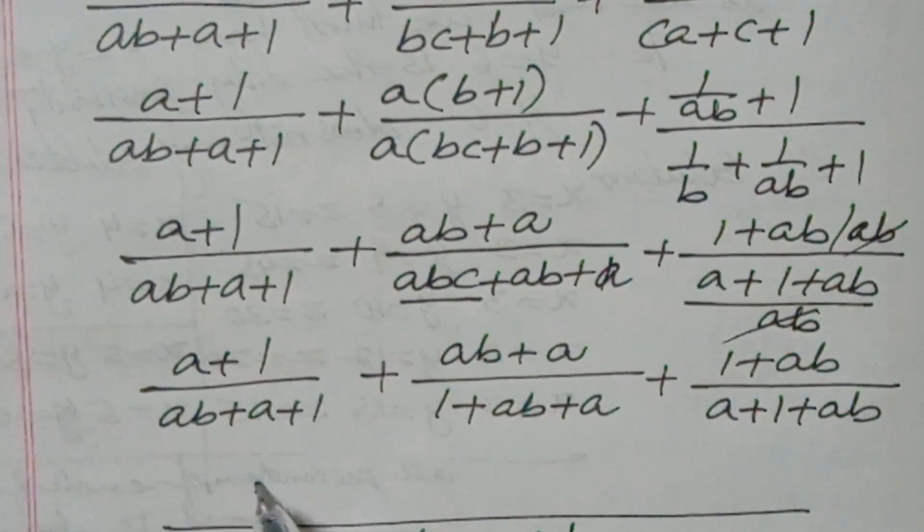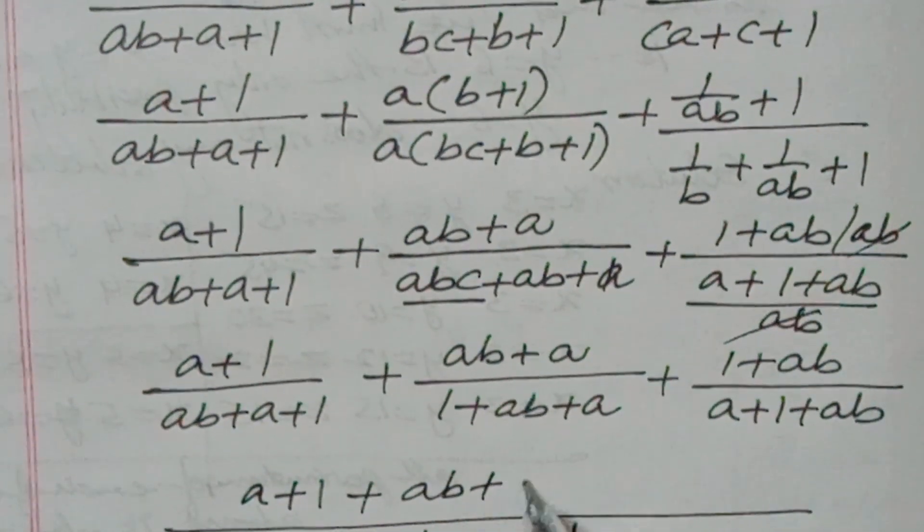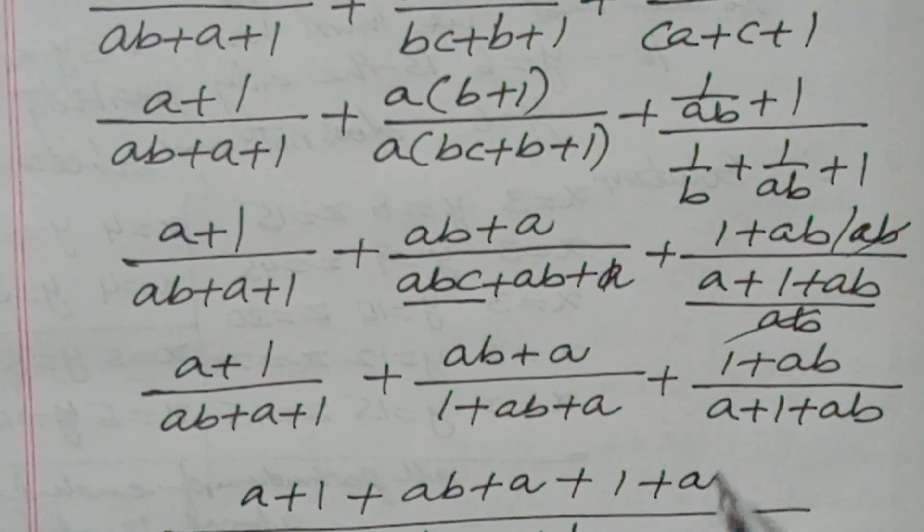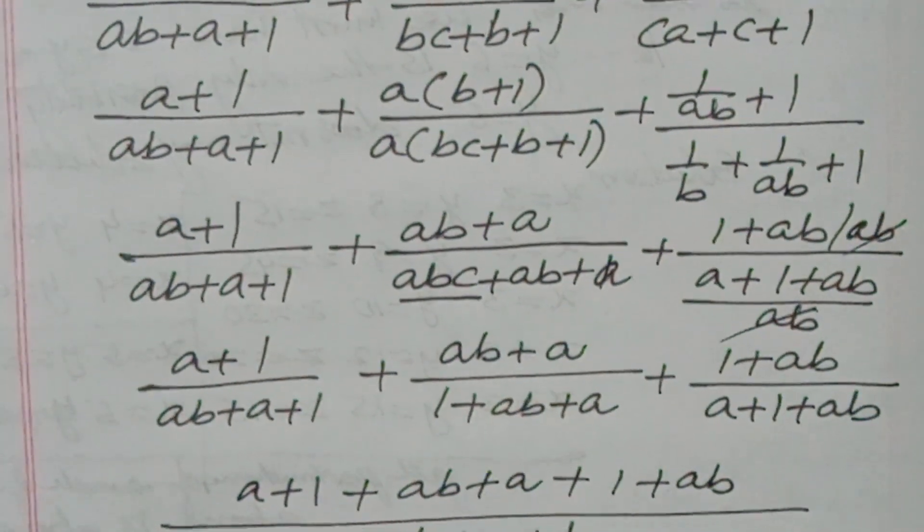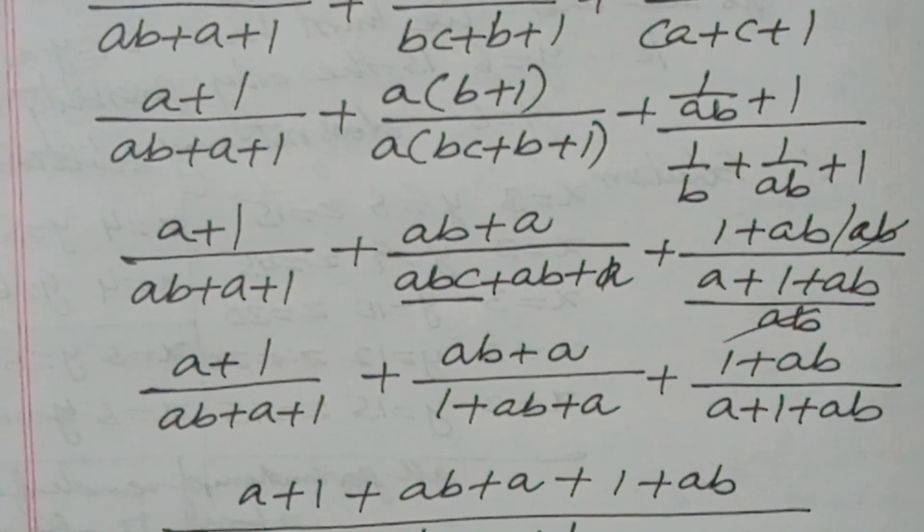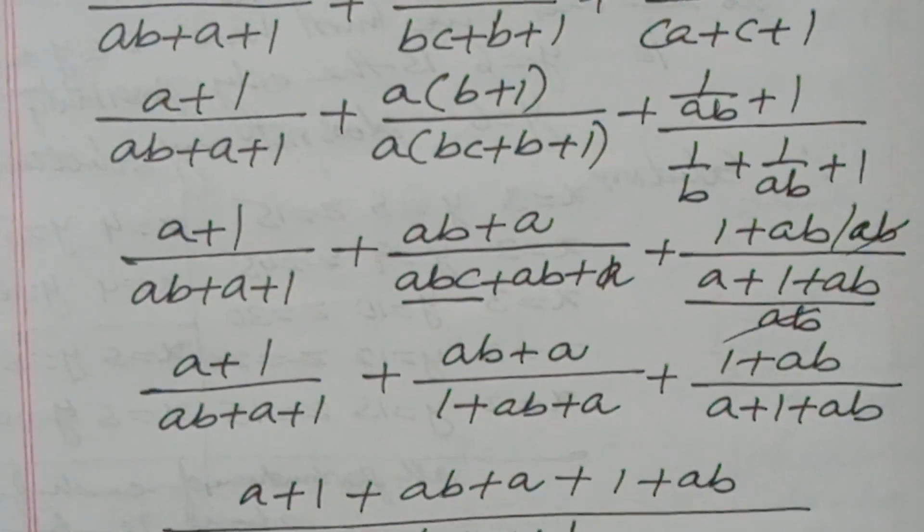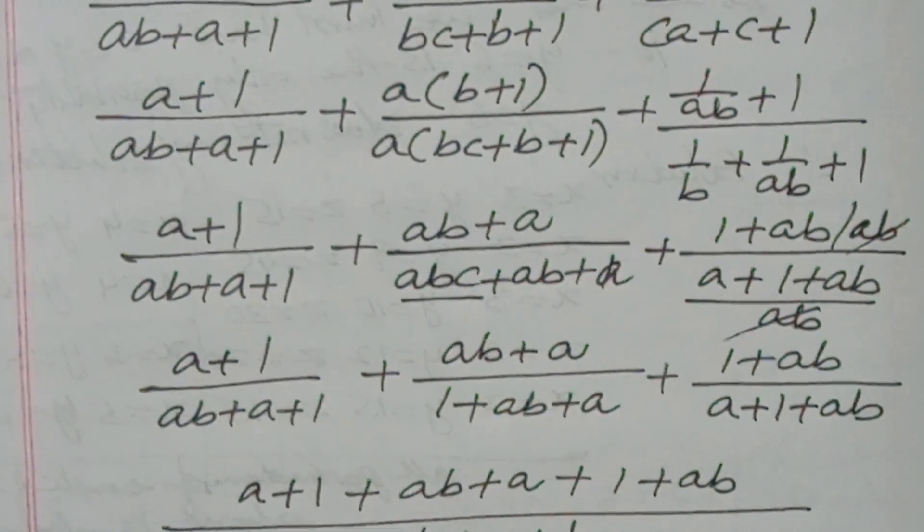In the numerator you have to add a plus 1 plus ab plus a plus 1 plus ab. So every term is 2 times: 2ab plus 2a plus 2, which is 2 times ab plus a plus 1.